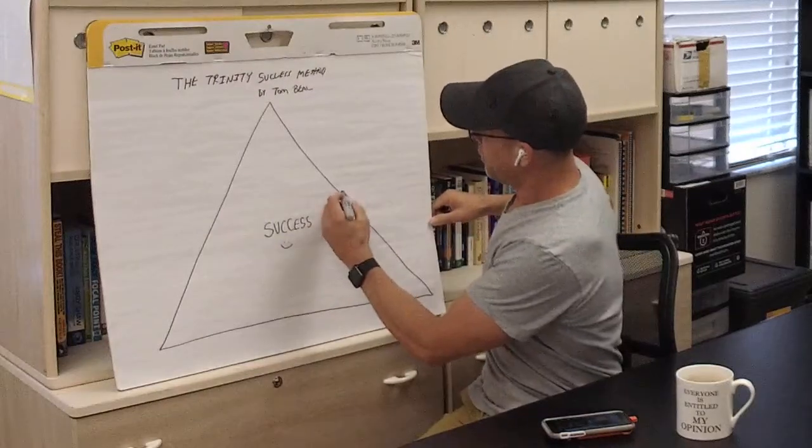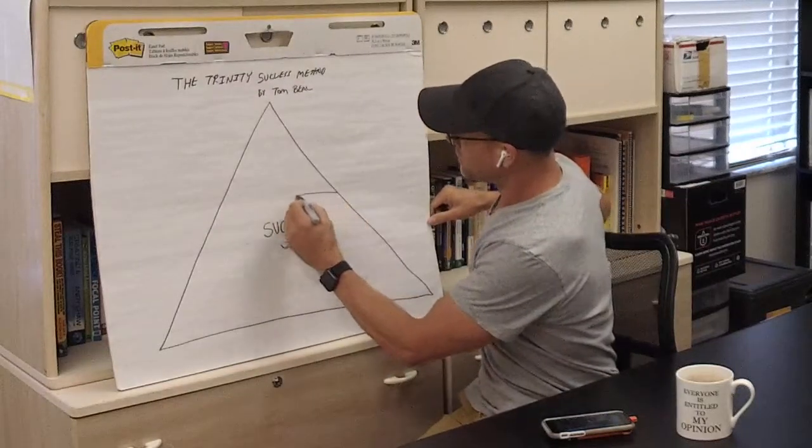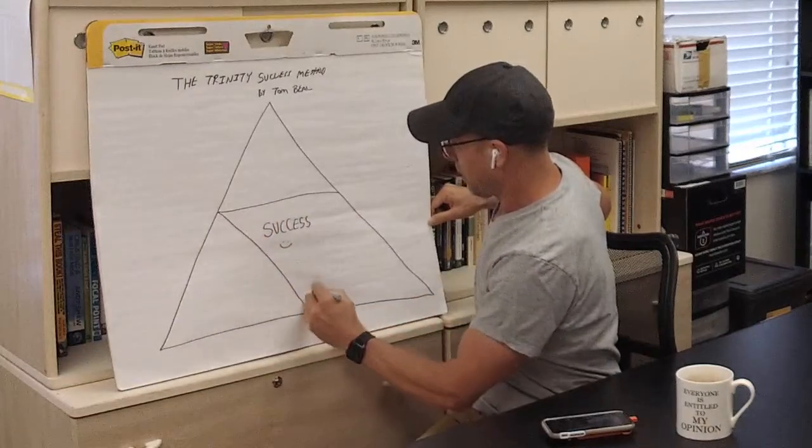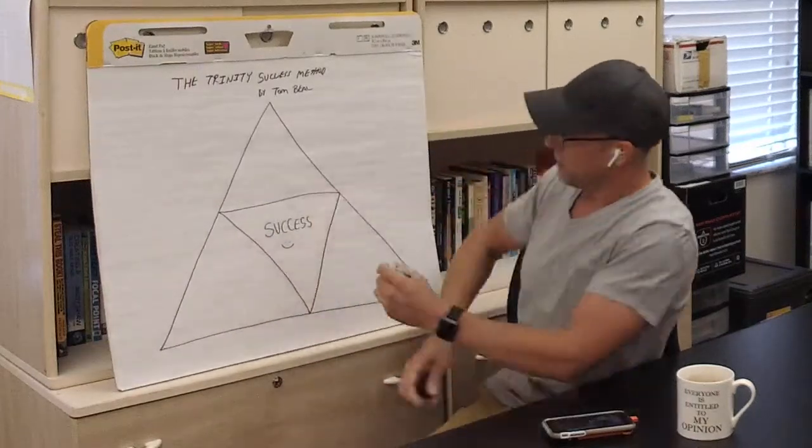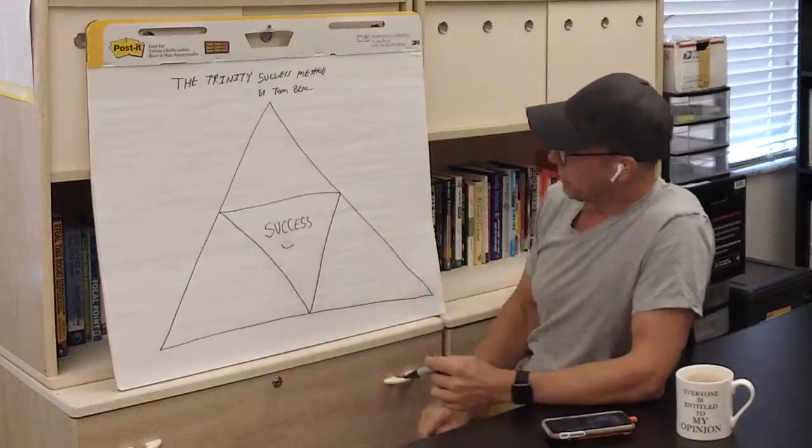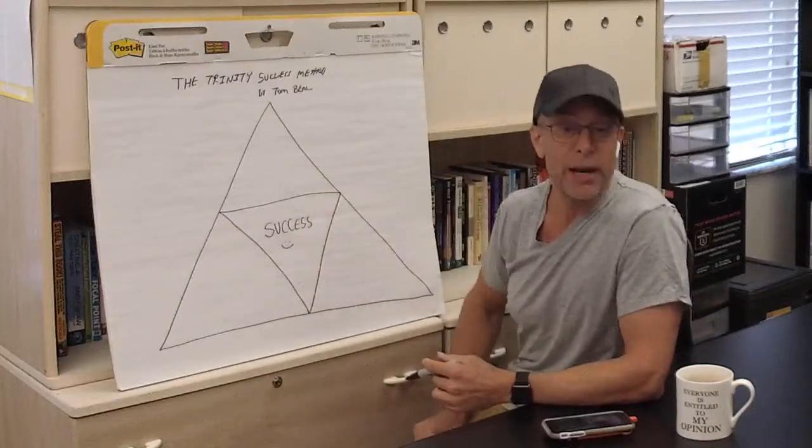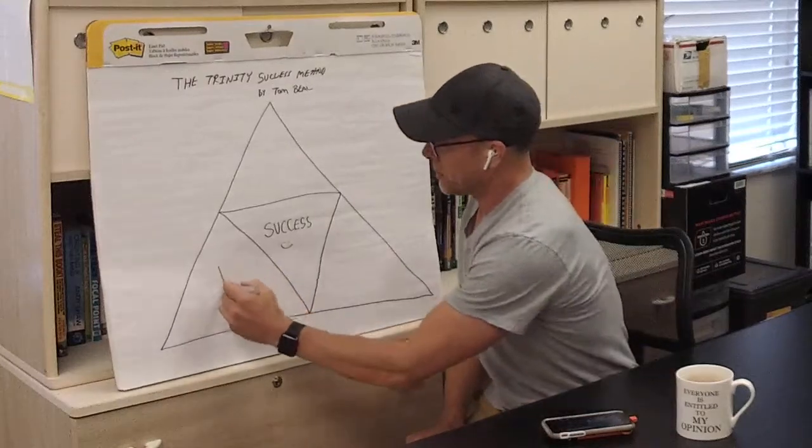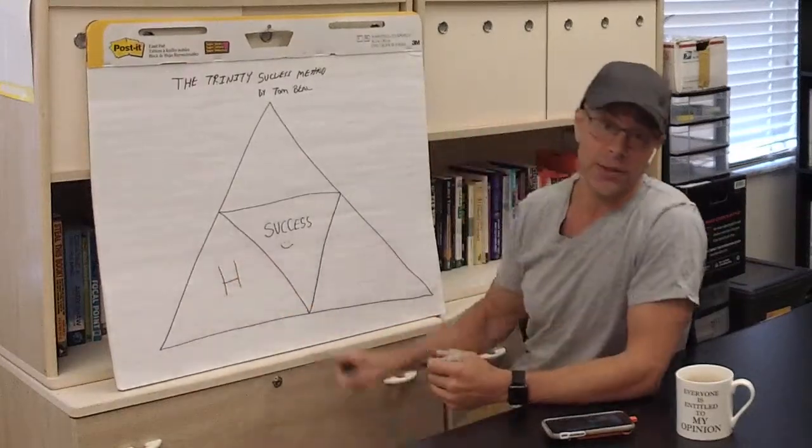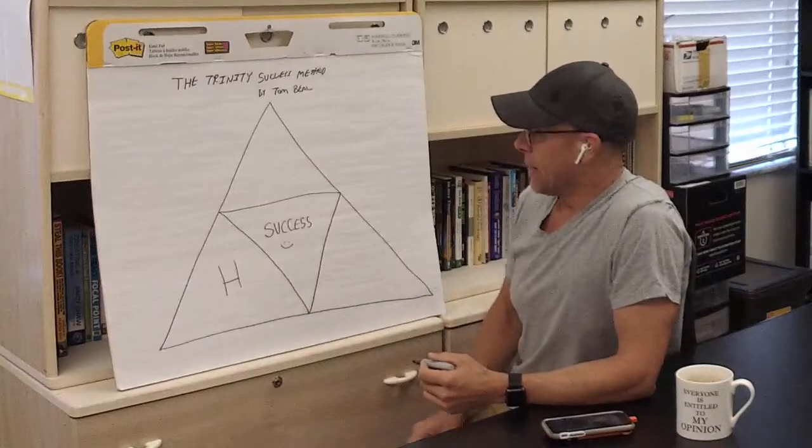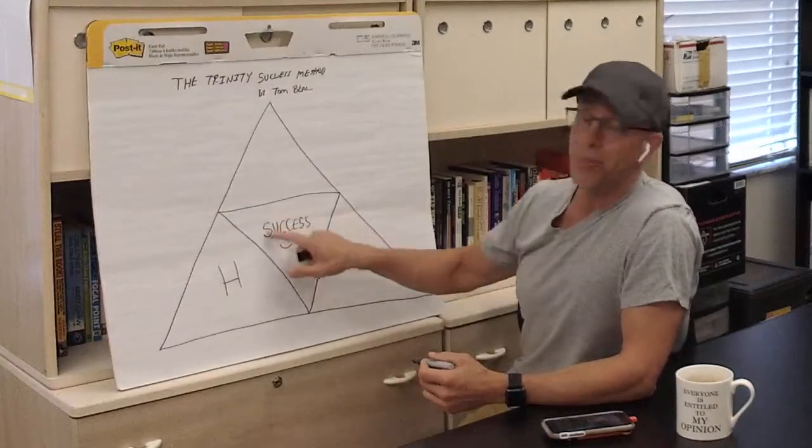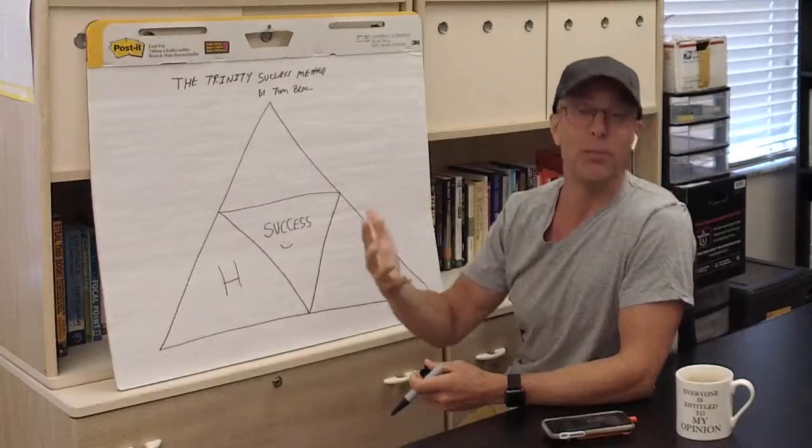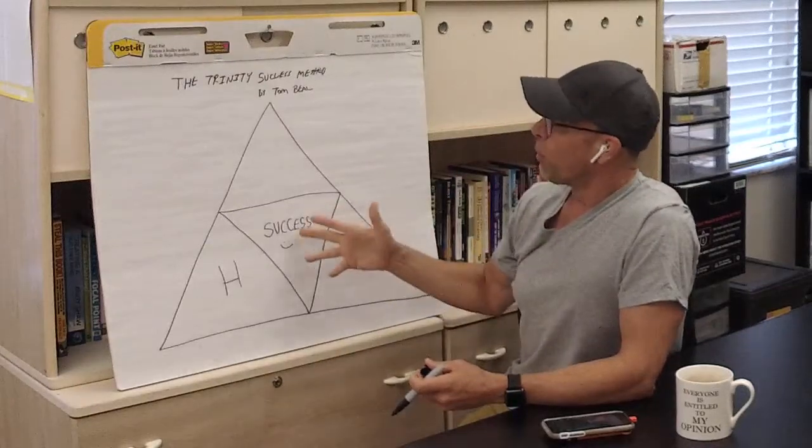So success, gain clarity on what that means to you. And then, you don't need to be a good drawer or anything of that nature. So success, that's the goal in the middle. And I broke it down into three separate areas. I call this my Trinity success method. At the base we have health, I'll put an H there for health. Now, first of all, let's back up. A lot of people when they think of success think of the cash, the money, show me the money, Jerry Maguire.